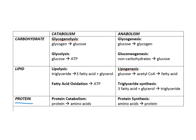Looking at protein metabolism, there are no special terms — simply protein catabolism, which is the breakdown of proteins into smaller peptides and amino acids, and protein synthesis, known as transcription and translation, which builds proteins from amino acids. Protein catabolism can supply amino acids for gluconeogenesis, while the anabolic reaction of producing proteins is generally for growth.